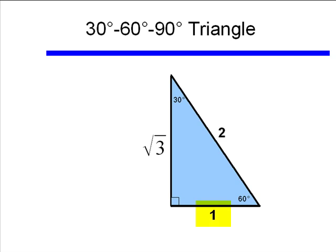Notice that the shortest leg, 1, is opposite the smallest angle, 30 degrees. 2 is the hypotenuse, and the other leg is square root of 3, or approximately equal to 1.732.